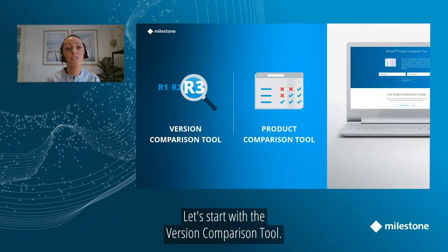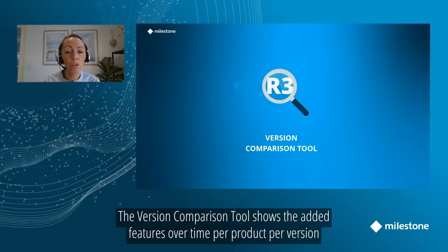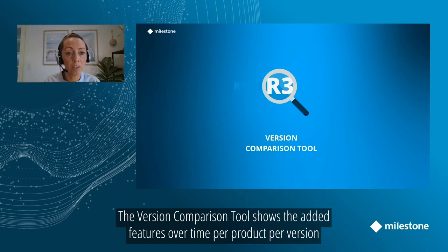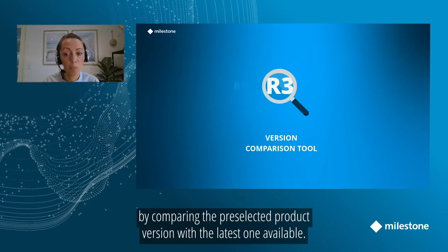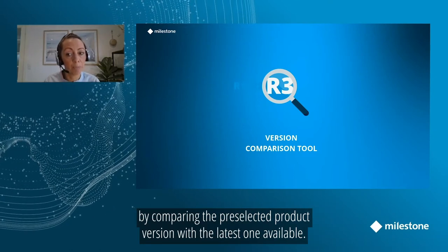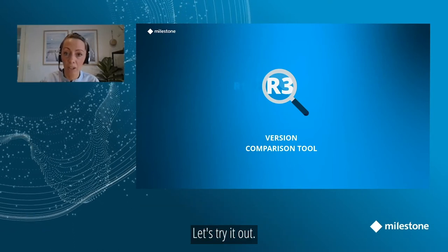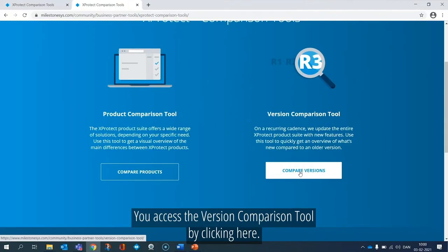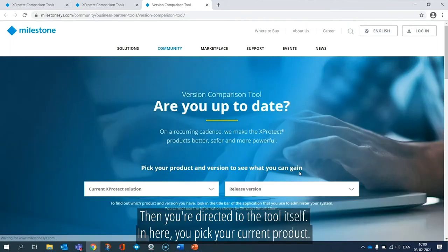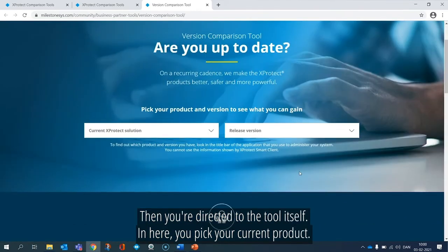Let's start with the version comparison tool. The version comparison tool shows the added features over time per product per version, by comparing the pre-selected product version with the latest one available. Let's try it out. You access the version comparison tool by clicking here, and then you are directed to the tool itself.